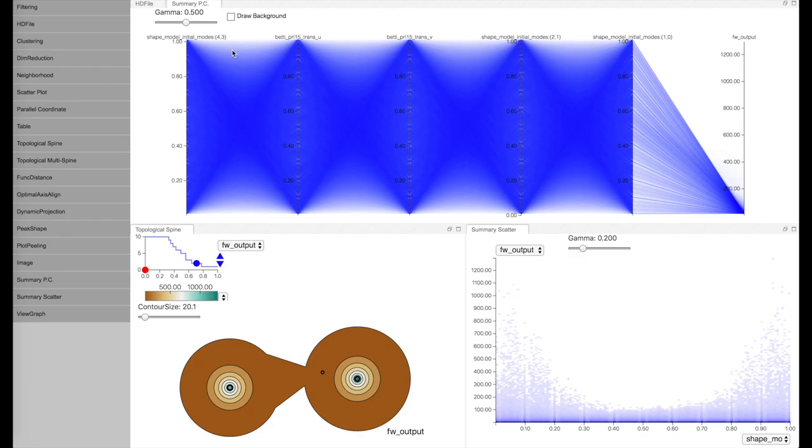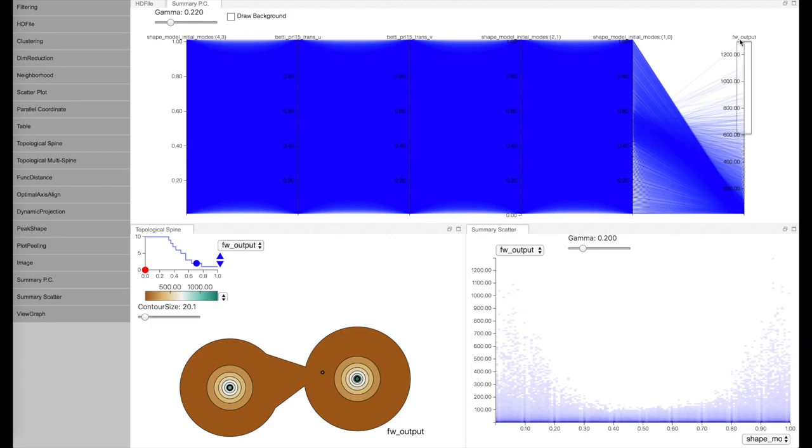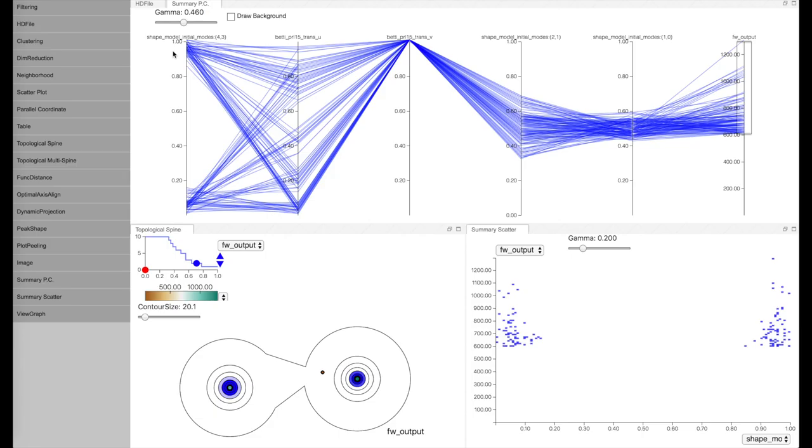We start the exploration of the surrogate model from the output error. Domain scientists are interested in high error regions in the parameter space. We can focus on those samples by selecting on the error axis in the parallel coordinate, which reveals an interesting binary pattern in the first dimension. With the linked views, we can see the corresponding selection in the topospine and scatterplot.